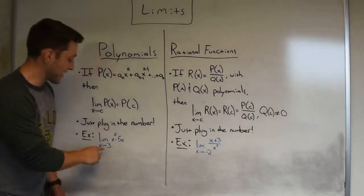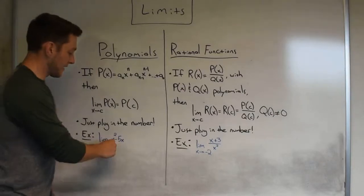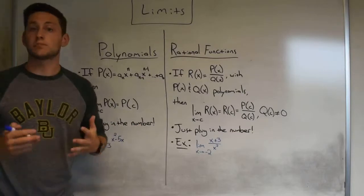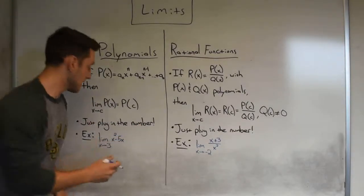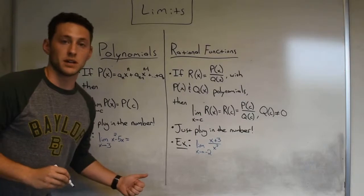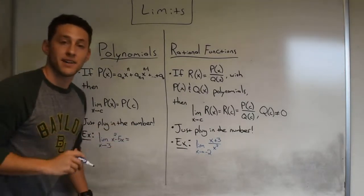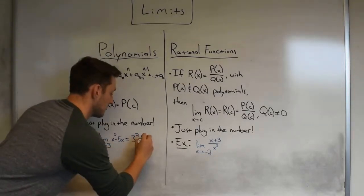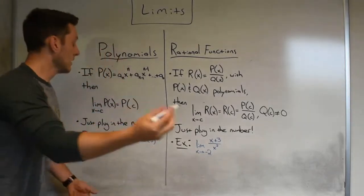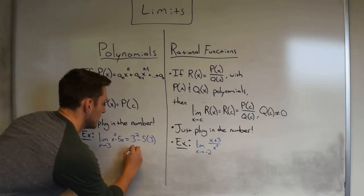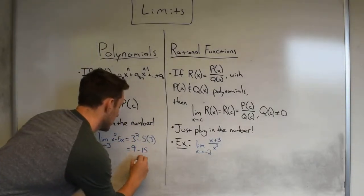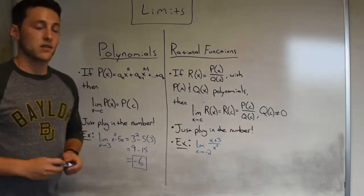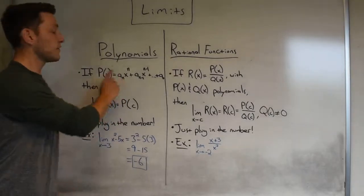For instance, let's calculate the limit as x approaches 3 of the function x squared minus 5x. Reverting back to our rule, just plug in the number: the limit as x approaches 3 of x squared minus 5x is just 3 squared minus 5 times 3. Doing some simplification, this is just 9 minus 15, which gives us an answer of negative 6. So just plug in the number if you have a polynomial.